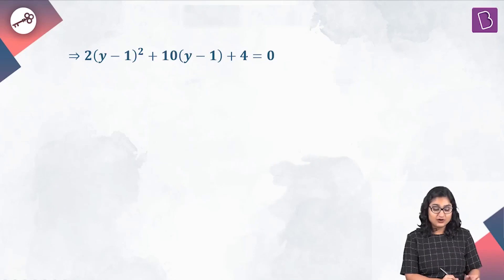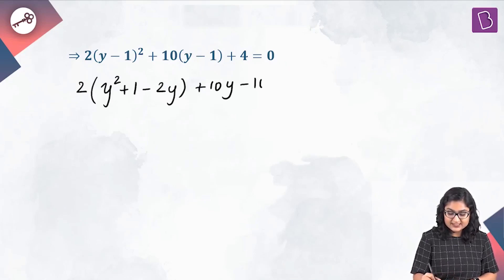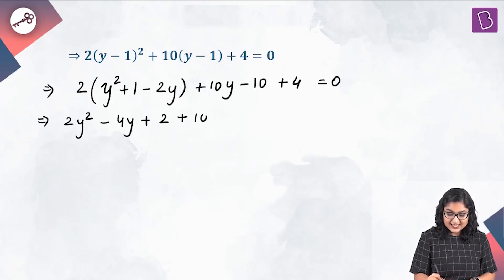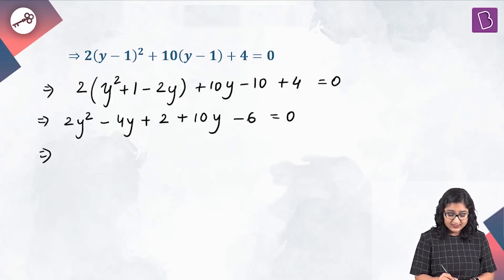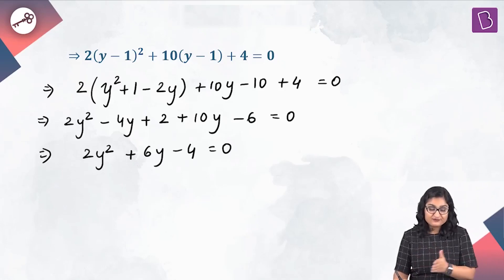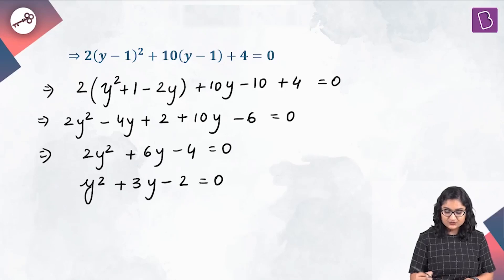Expanding further, we will get 2 times (y squared plus 1 minus 2y) plus 10y minus 10 plus 4 equal to 0. Simplifying, what I will get is 2y squared minus 4y plus 2 plus 10y minus 6 equal to 0. Simplifying further, we will get 2y squared plus 6y minus 4 equal to 0. Factoring out 2, we will get y squared plus 3y minus 2 equal to 0.